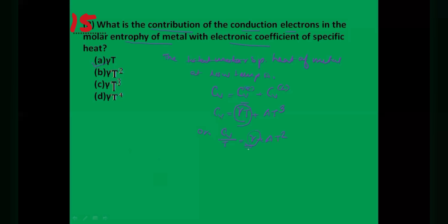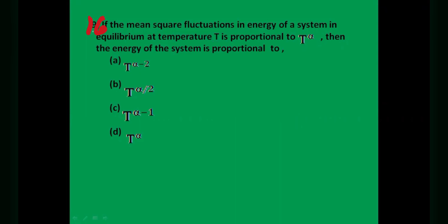Additionally, to find the value of γ: if you draw a graph of CV/T versus T², it gives a straight line. The intercept on the vertical axis gives the coefficient γ.